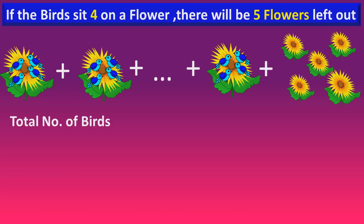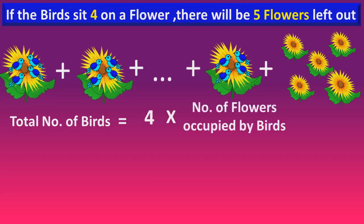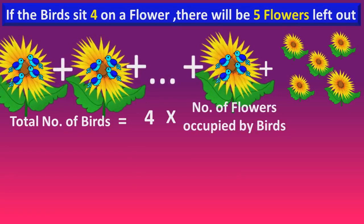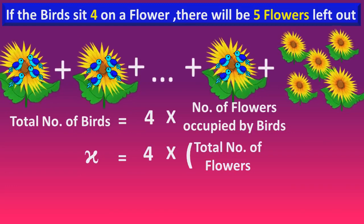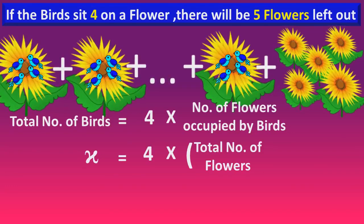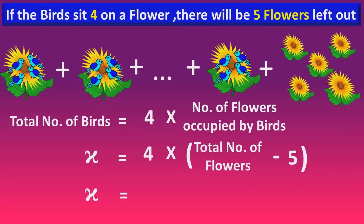So, the total number of birds is equal to 4 times the number of flowers occupied by birds. The number of flowers occupied by birds is the total number of flowers minus 5. So, X is equal to 4 into (Y minus 5). This is equation 2.